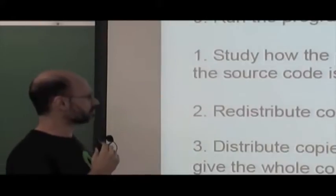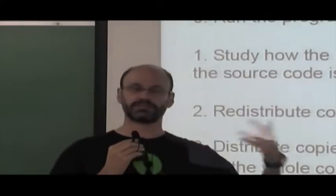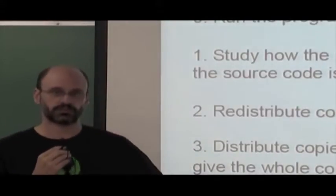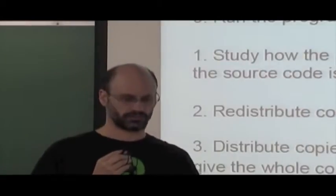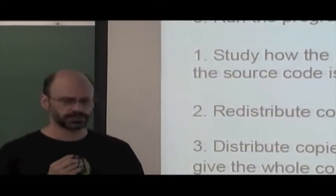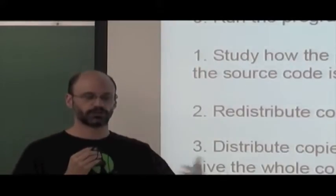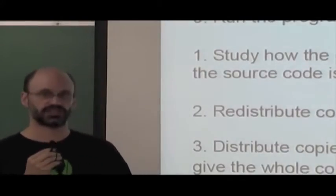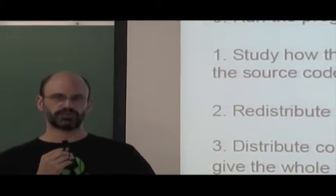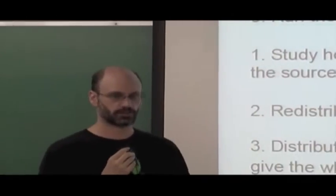Freedom two is to redistribute copies so you can help your neighbor — you can give copies of the software to other people so they will also benefit. Freedom three is to distribute copies of your modified versions to others, giving the whole community a chance to benefit from your changes. The idea is that you get the software, use it, improve it, modify it, and share those contributions with the entire community.